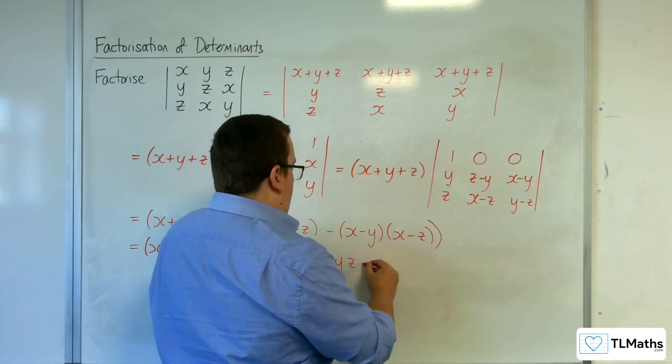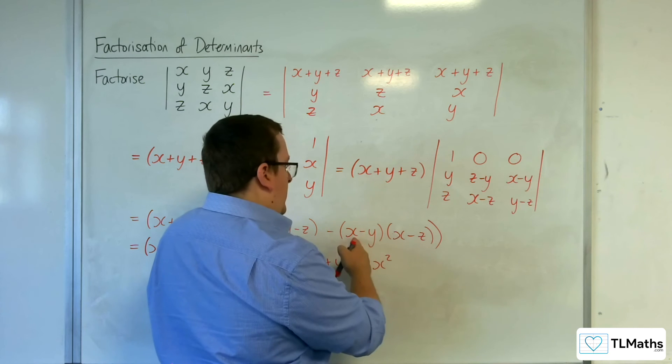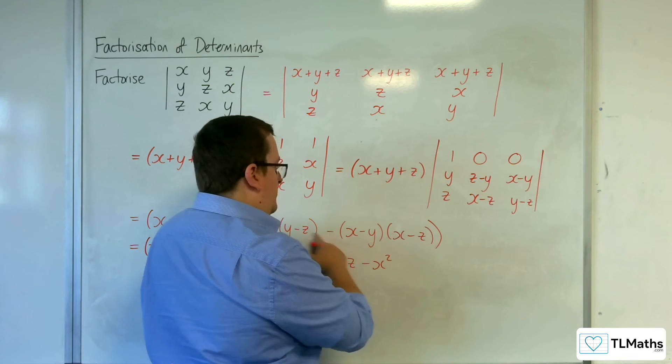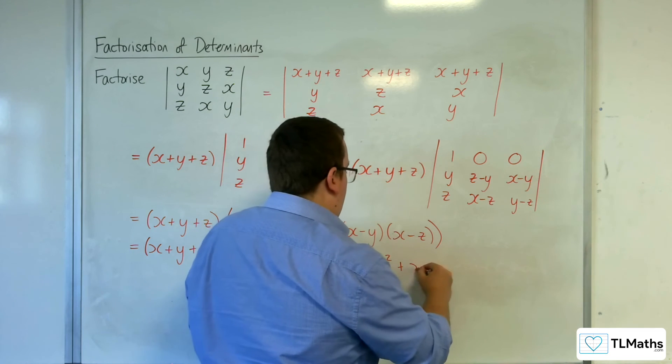Then I'm going to get take away x squared. I'm going to have x times minus z, so take away that, so plus xz.